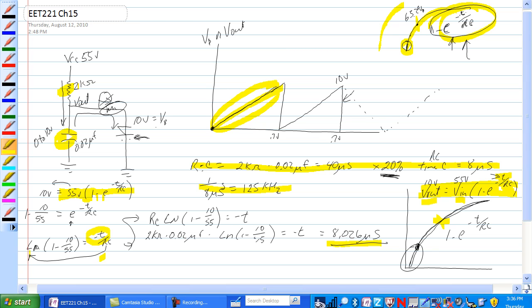We'll take the RC over and we end up with RC times the natural log of 1 minus 10 over 55 is equal to minus t. So you start plugging in values, 2k ohms, 0.02 microfarads times the natural log of this.